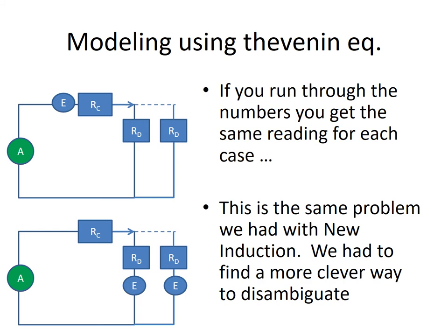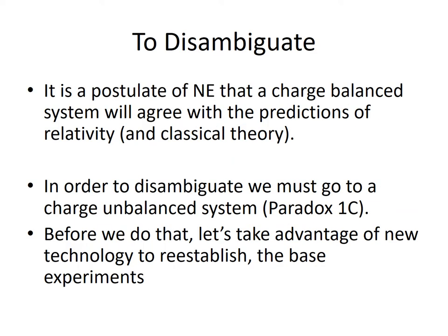In order to disambiguate, there's a postulate of new electromagnetism: a charge balance system — a system with an equal number of positive and negative charges. A magnet is a charge balance system because there's no net charge on a magnet. A current running in a wire is another charge balance system. So in order to disambiguate we need to go to a charge-unbalanced system, and we're going to discuss that — that's going to be the Paradox 1C experiment.